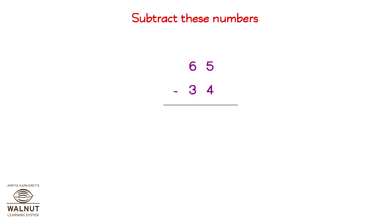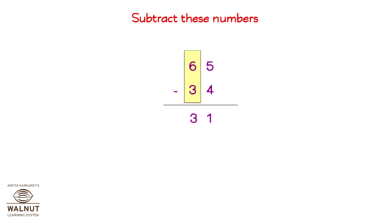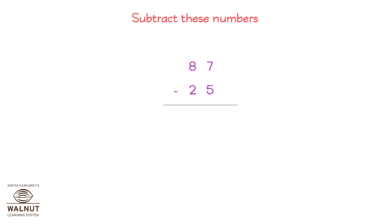Now you can do this subtraction quickly and directly. Just follow the same method. 65 minus 34. Try one more: 87 minus 25.